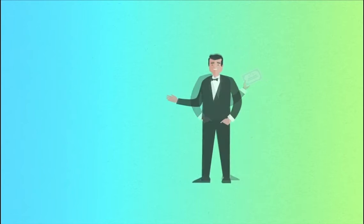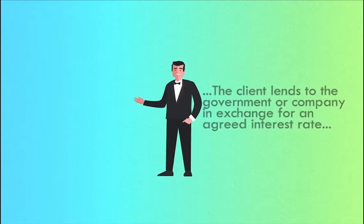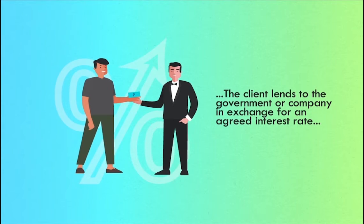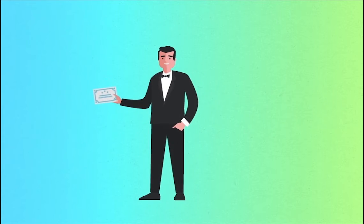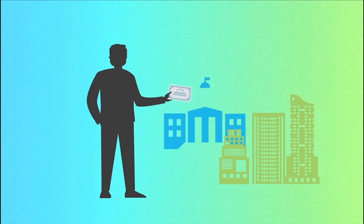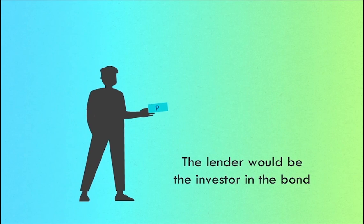Debt instruments, or bonds, refer to the commitment of the borrower to repay the lender the principal amount at a fixed interest rate for a defined time period. The borrower in a bond is also known as the issuer of the bond. The issuer may be a company or a government. The lender would be the investor in the bond.